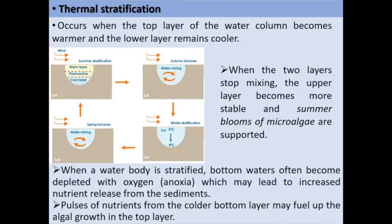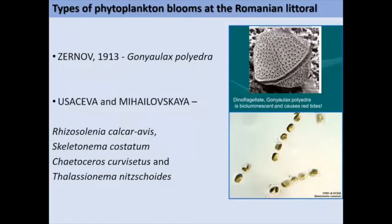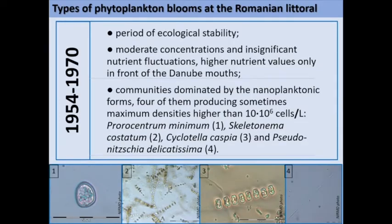The first recorded case was described in 1913 by Zerunov, which was a bloom with Goniaulax polyhedra. Then Usacevan and Mikhailovskaya also recorded blooms with the diatom Rhizosolenia calcaravis. At the Romanian littoral during 1954–1977, there was a period of ecological stability with moderate concentrations and insignificant nutrient fluctuations, with high nutrient values only in front of the Danube's mouth. Communities were dominated by nanoplanktonic forms, four of them producing sometimes maximum densities higher than 10 million cells per litre. The most important species were Procentrum minimum, Skeletonema costatum, Cyclotella caspia, and Pseudo-nitzschia delicatissima.